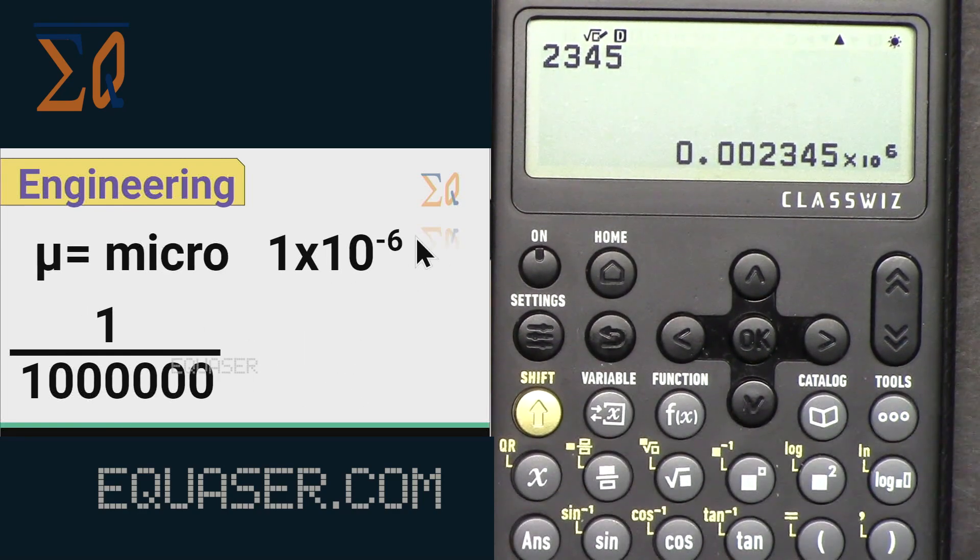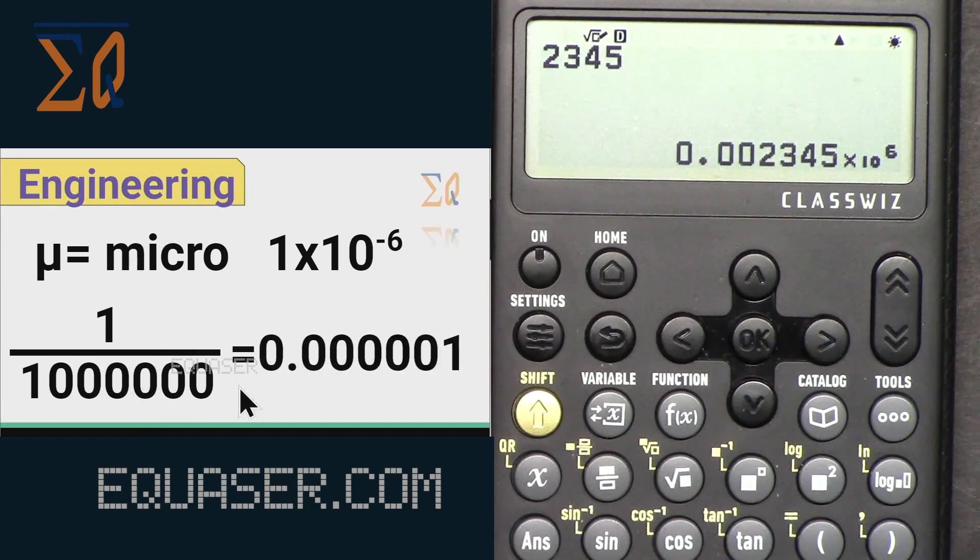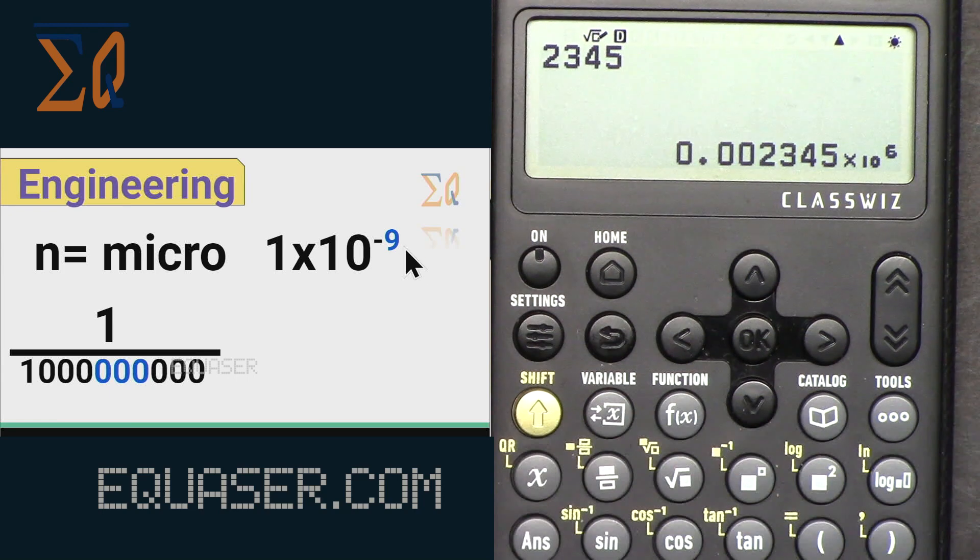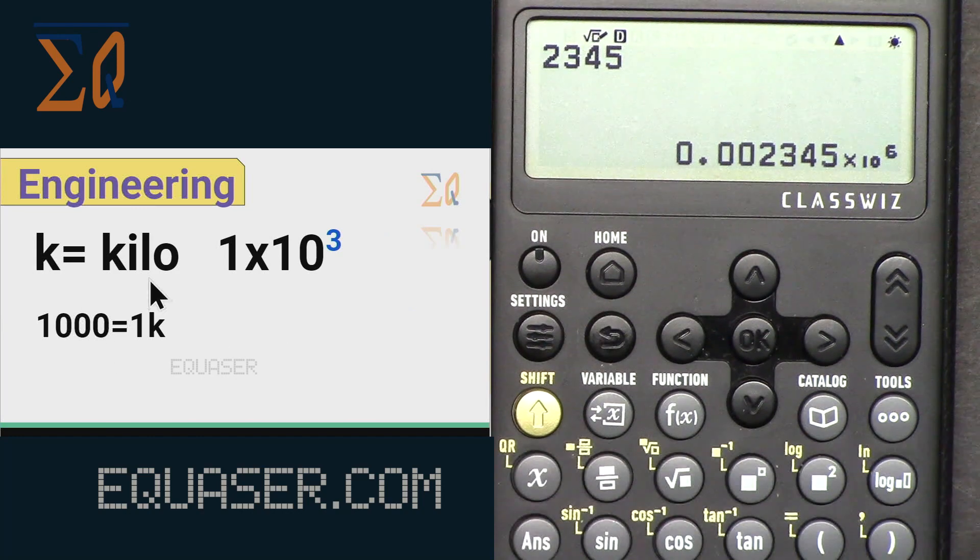So micro is 1 times 10 to the power minus 6. Pico is 1 times 10 to the power 12, femto is 1 times 10 to the power 15. So every time it increases by 3.